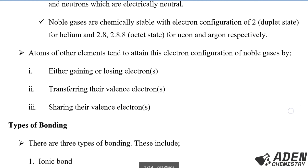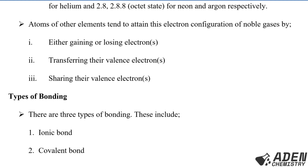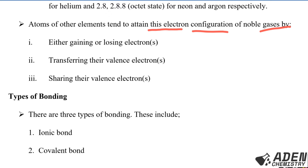Atoms of other elements tend to attain the electron configuration of noble gases by either gaining or losing electrons — as we have seen in ion formation — or by transferring their valence electrons (Roman II), or by sharing their valence electrons (Roman III), to achieve configurations of 2, 2,8, or 2,8,8.